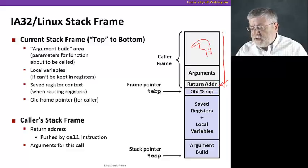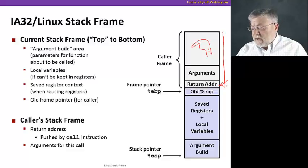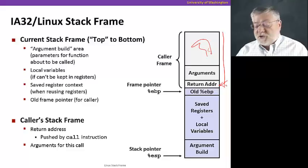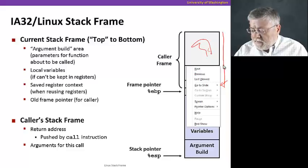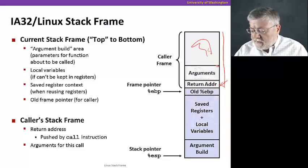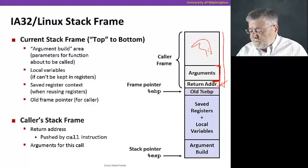it also stores the return address that it wants the system to return to when the callee procedure is finished. So what the caller has done is built up a bit of an area here where it's put in the arguments to the callee function and then a little bit more space for that return address.